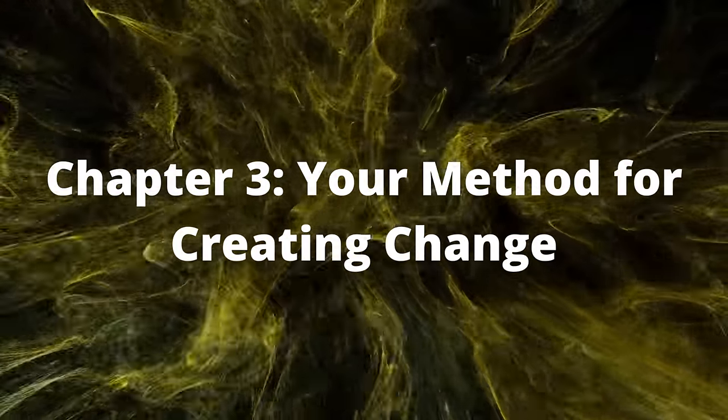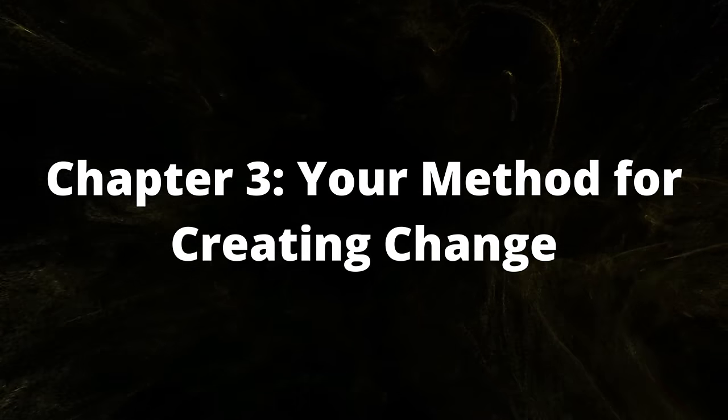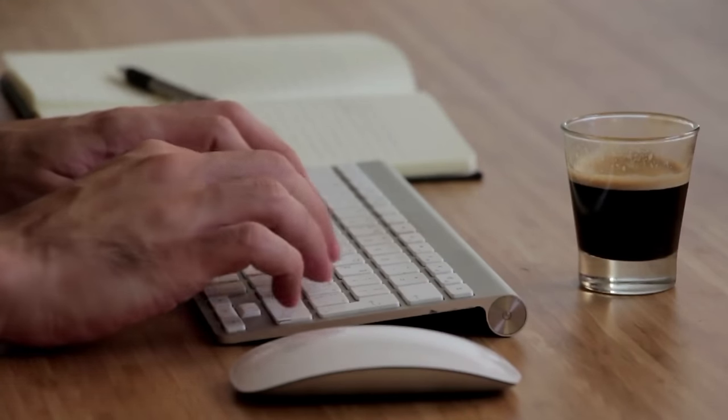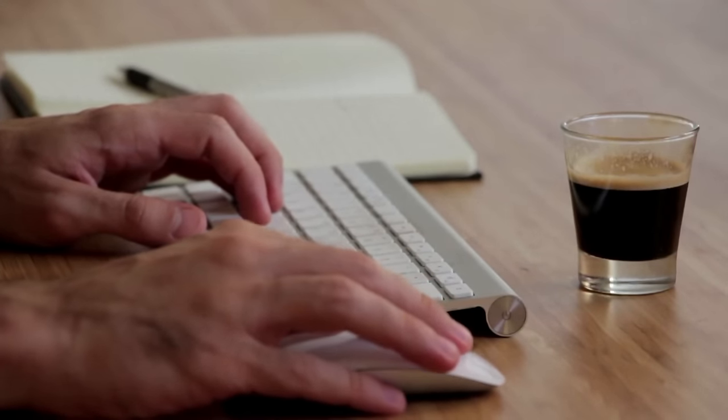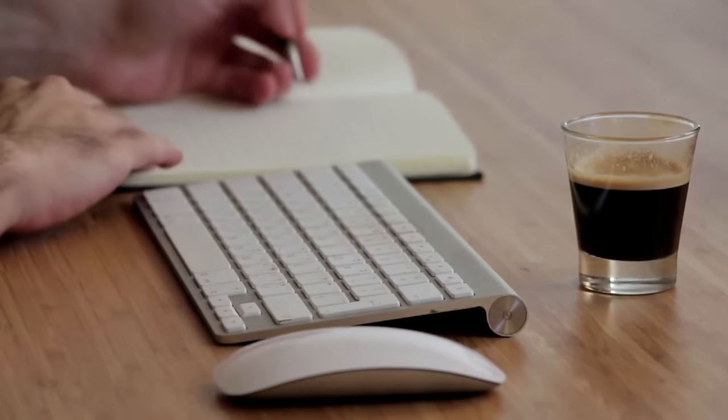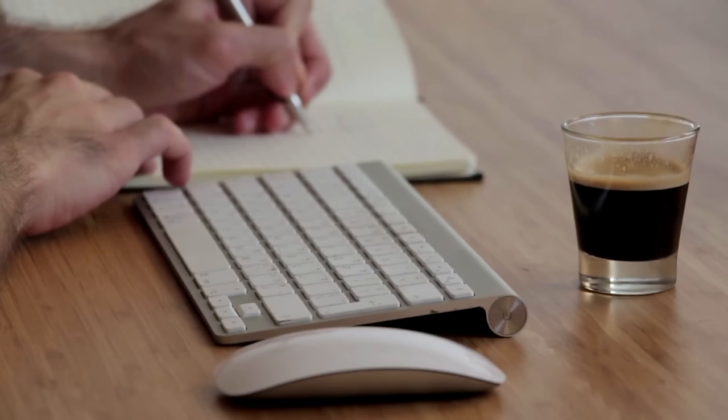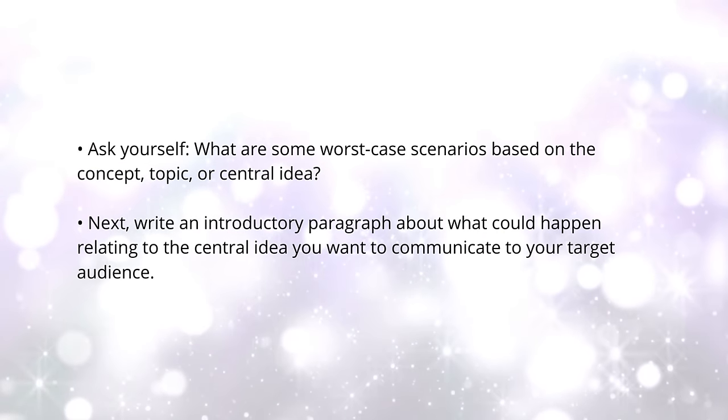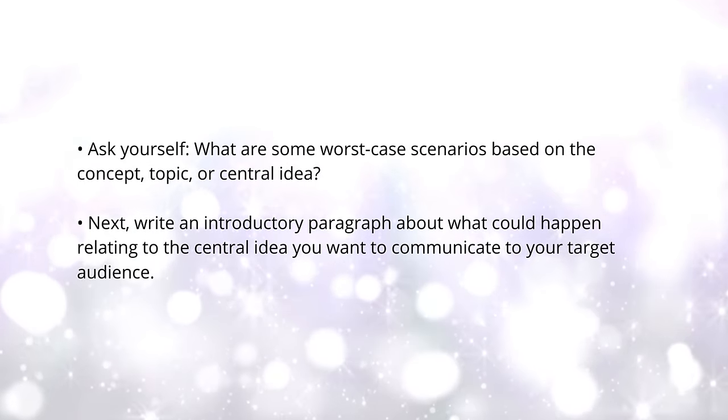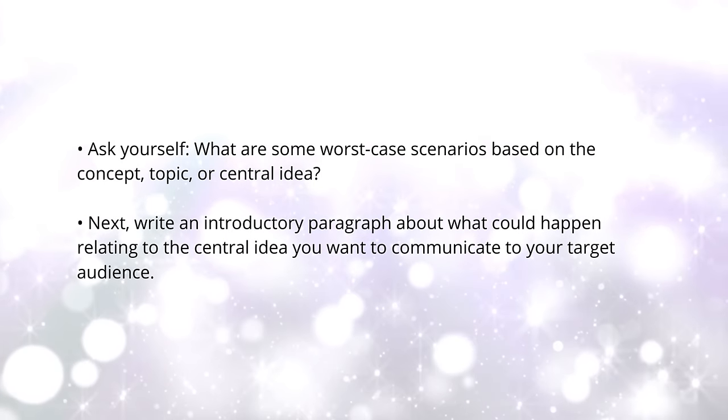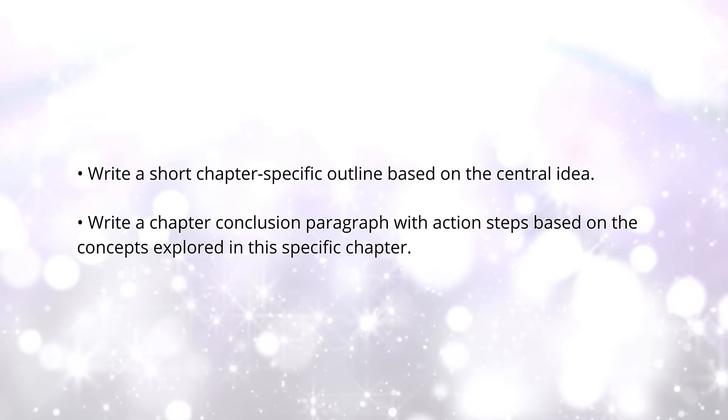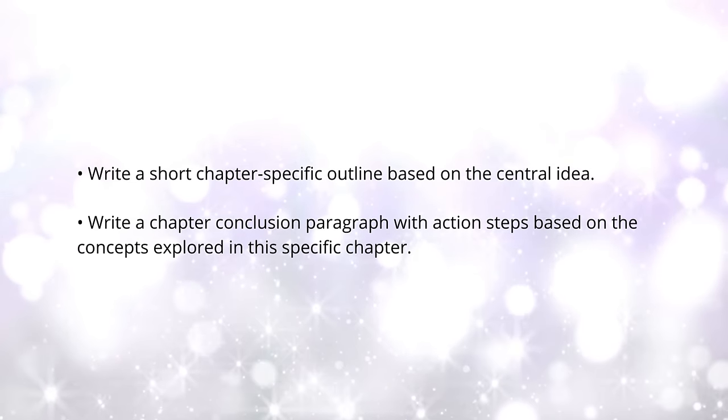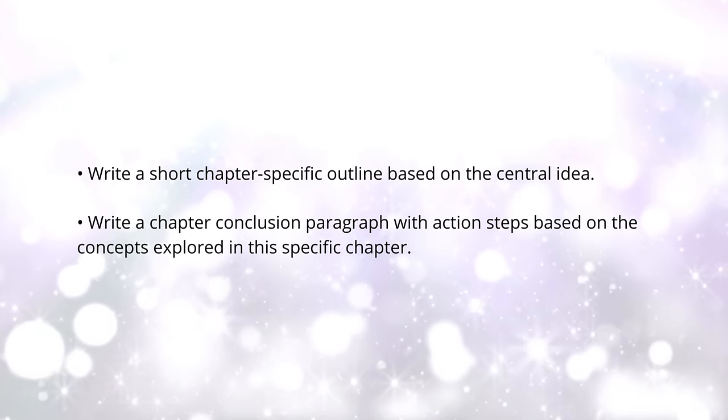Chapter three, your method for creating this change. For chapter three, you want to ask yourself: why is this method different? The third chapter should dive deeper into how much worse things can potentially get. You want to include specific examples in your nonfiction book by giving statistics, pictures, or stories that are relatable to the topic. Ask yourself, what are some of the worst case scenarios based on the topic or central idea? Next, write an introductory paragraph about what could happen relating to your central idea and what you want to communicate to your target audience. Next, write a short chapter specific outline based on the central idea. Then you want to write a chapter conclusion paragraph with action steps based on the concept that you just discussed.